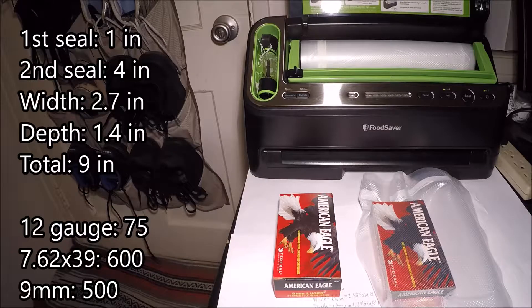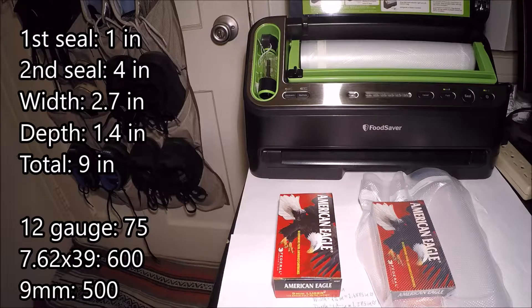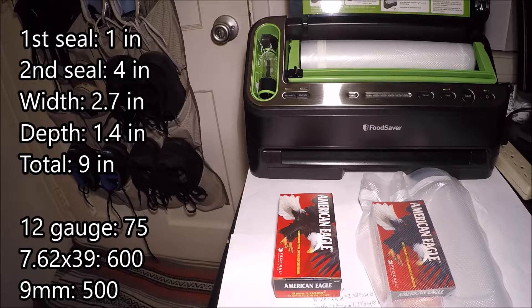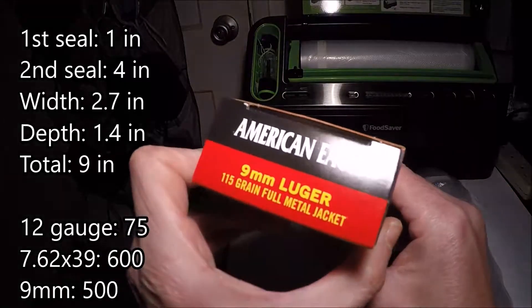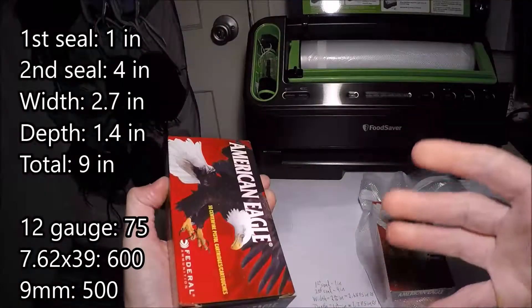Hey what's up YouTube, Double OT Josh coming at you guys today with my 44th vacuum sealing video. We're just going to keep going with this American Eagle 9 millimeter 115 grain FMJ which I showed you in the previous two.